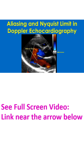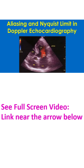When the Nyquist limit is exceeded twice, the color shifts back to the original color — this is known as the second wraparound. In this image, the color bar is displayed on the left upper corner, which is obviously from a different machine.